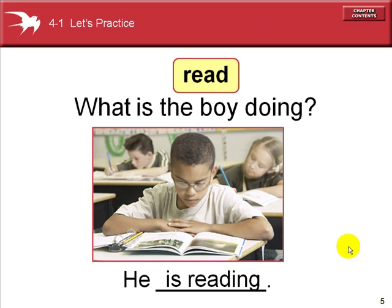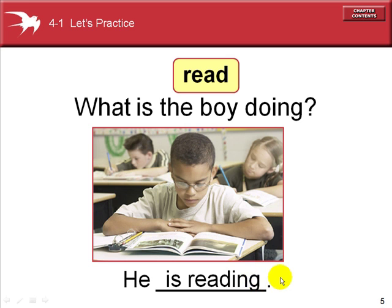What is the boy doing? He is reading. He is the third person singular. The form of the verb to be is 'is,' and reading — read is the verb, and we add the ing ending.